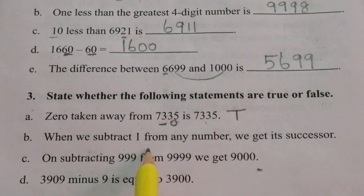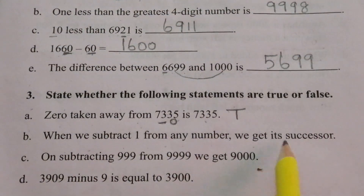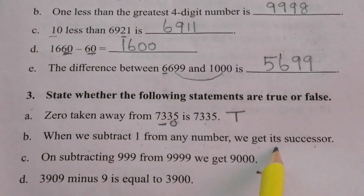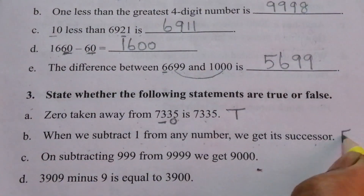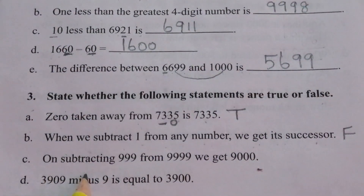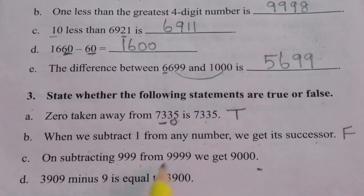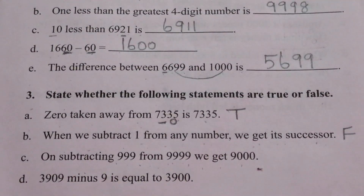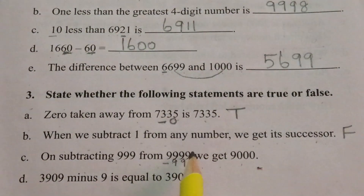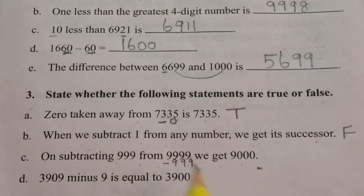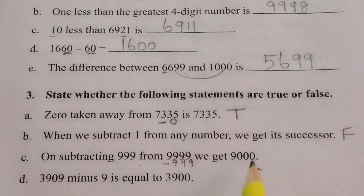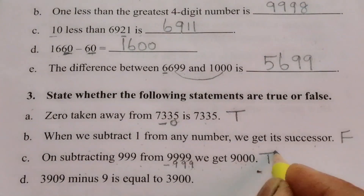B: When we subtract one from any number we get its successor — this is false, because when we subtract one from any number we get its predecessor. C: Nine thousand nine hundred ninety-nine minus nine thousand nine hundred ninety-nine — nine minus nine is zero four times — so the answer is zero. This is true.